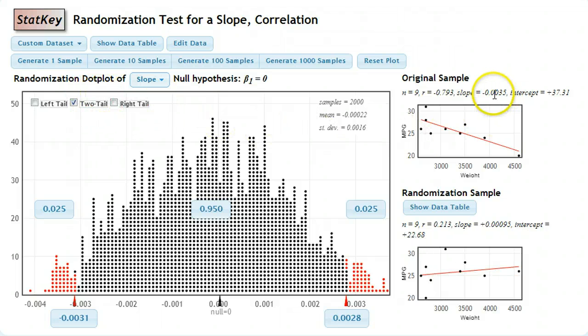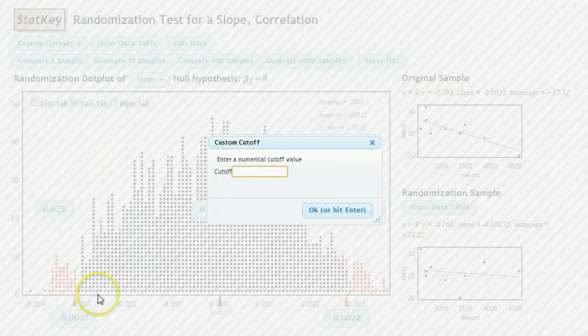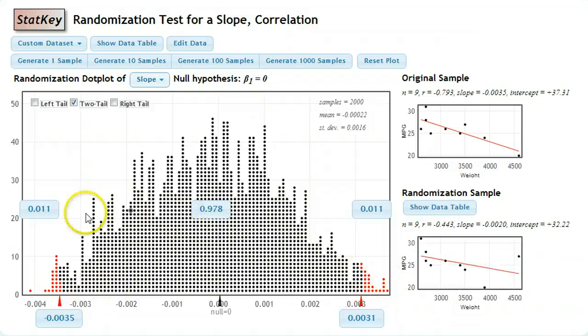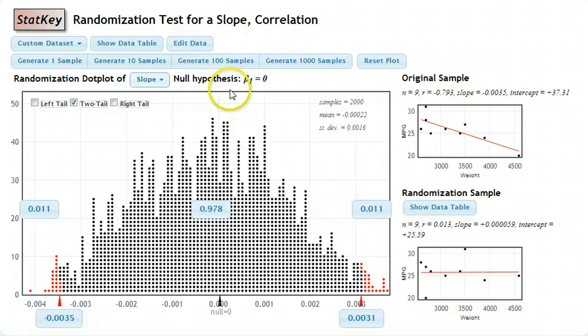Next thing I want to do is look at my actual slope, negative 0.0035. In this case, I'm actually going to copy it, negative 0.0035. I'm going to go down here to the lower end, to the left end, where it looks like I have something pretty close to that, and I'm going to paste in that value. My graph will automatically update itself, and it looks like I have a 0.011 probability of finding a slope that extreme or more extreme when we assume that the slope is zero, that the null hypothesis is true.